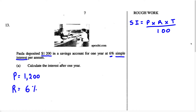For the time, we know it's going to be given in years. Paula deposited $1,200 in a savings account for one year. So they tell us how long she's going to deposit the money for — it's going to be one year. So for T, we have 1 year. Now let's fill in this information into our formula to find the interest.